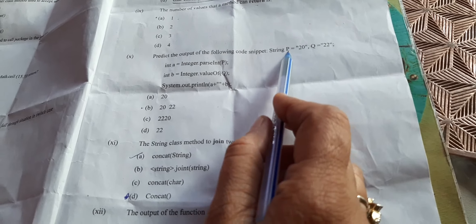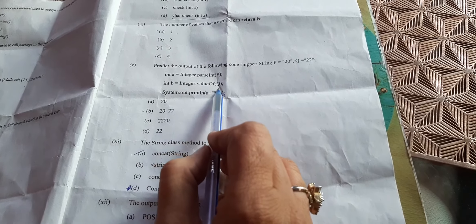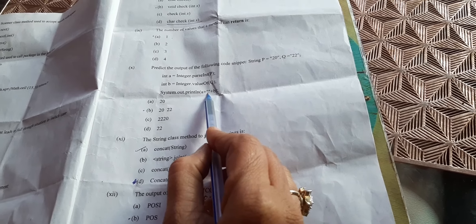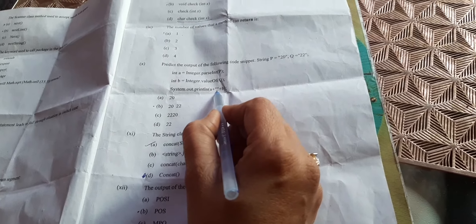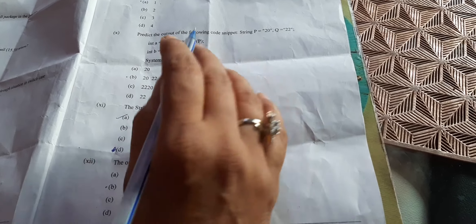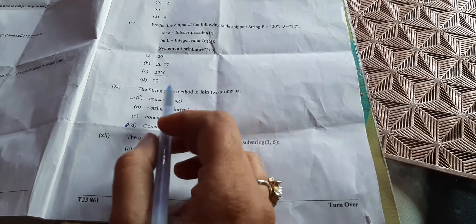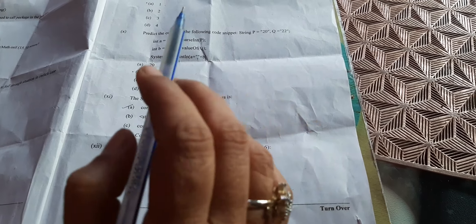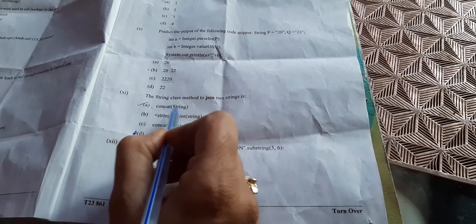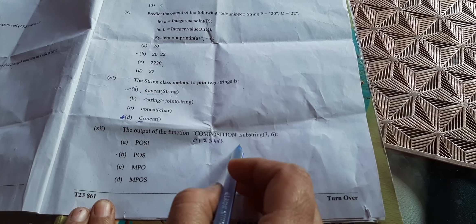Predict the output. They have given 20 in quotation string type, 22. They have converted parseInt, and value are both will convert it into integer type and they have given space in between. So here space is not given logically, but the answer will be 20 space 22. String class method to join two strings is concat. This is capital so this is not correct. Concat string: we write string1.concat(string2), so correct answer is A.